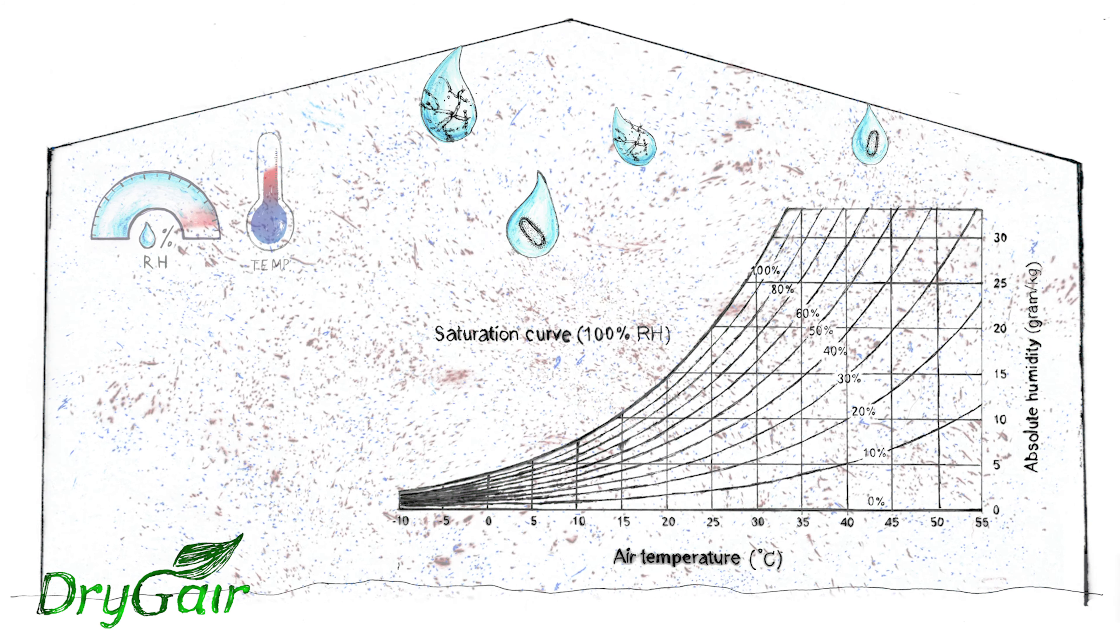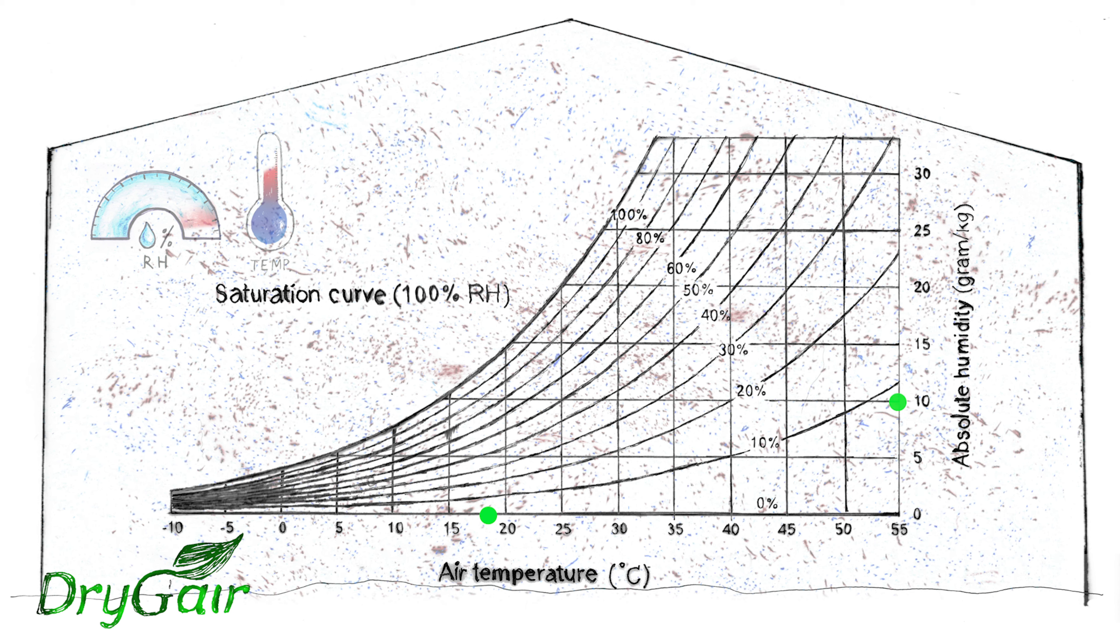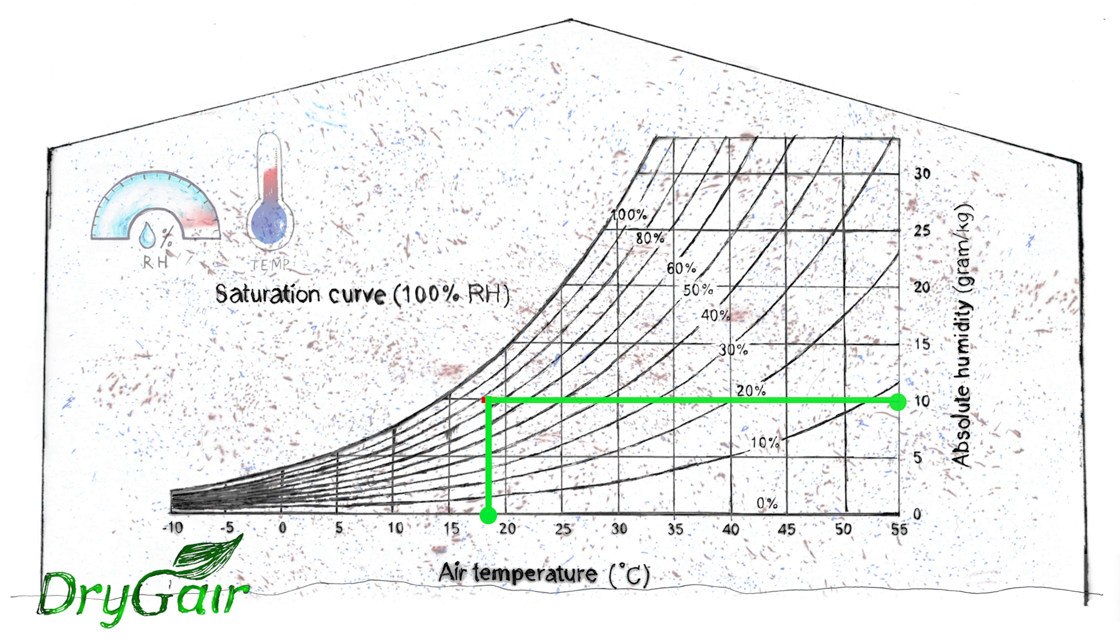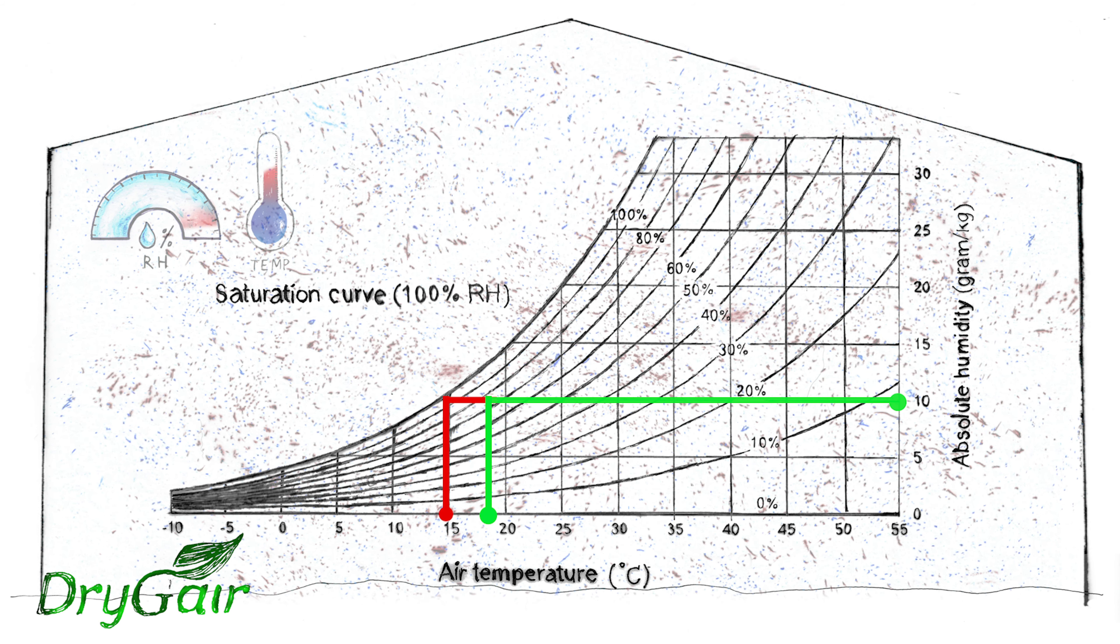Understanding the psychrometric chart helps to avoid the dew point. From any given point of temperature and absolute humidity content, draw a line to the saturation curve. The corresponding temperature underneath will be the dew point.